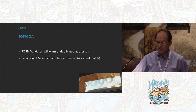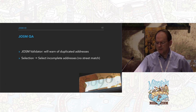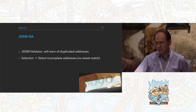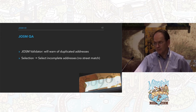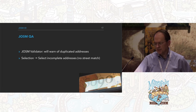JOSM has a validator. When you try to check things in, it will tell you that you have duplicate addresses — this occasionally tells me I've messed up. It also has a way to select incomplete addresses where there's no street match.